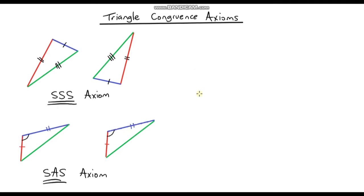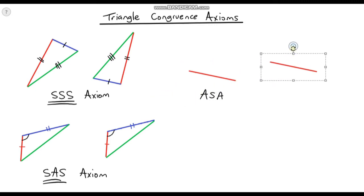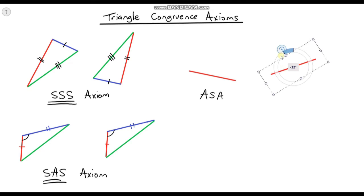The next one I'm going to try is ASA. To recap: if we have two triangles where two of the angles are the same and the side length in between those two angles is the same, are those two triangles congruent? Let's first draw our side length — it goes like this — and I'm going to copy and paste that because we need a second one of exactly the same length, but this time I'm going to rotate it just to show that we don't have to have it at the same angle. These two sides are exactly the same length, and now we need to make the angles that branch off from these side lengths exactly the same.